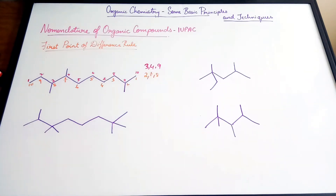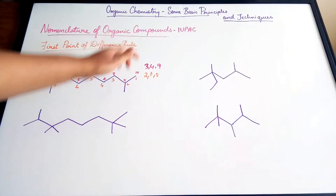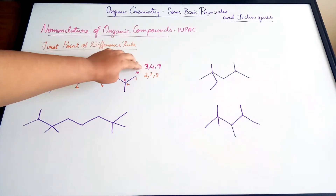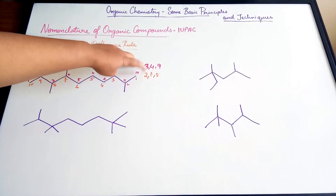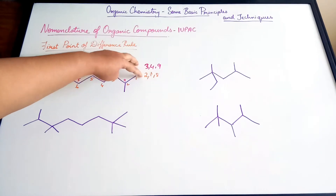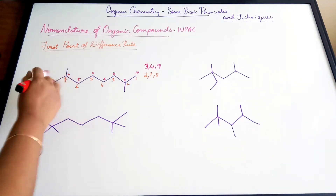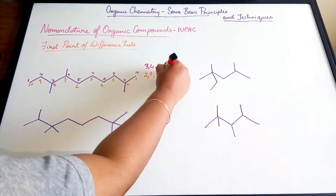Going right to left, the substituents are at the second, seventh, and eighth carbons. According to the first point of difference rule, we look at the first position where the numbers differ. Here the first digit itself is different — two versus three — and we select the lower number. Since two is lower than three, the right-to-left numbering (shown in orange) is correct.